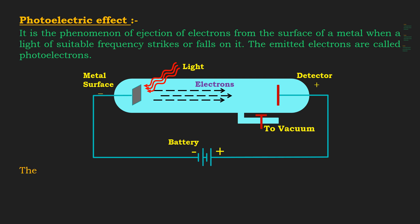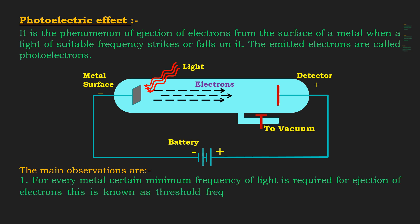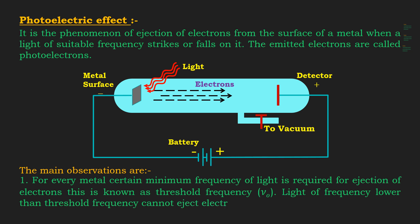The main observations of this experiment are: First, for every metal, a certain minimum frequency of light is required for ejection of electrons. This is known as threshold frequency, represented by ν₀. Light of frequency lower than threshold frequency cannot eject electrons.